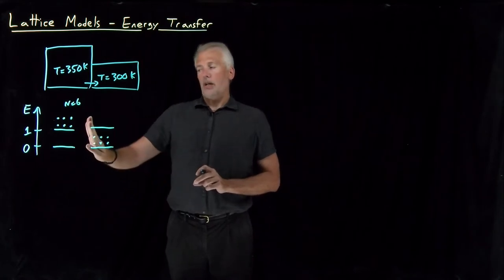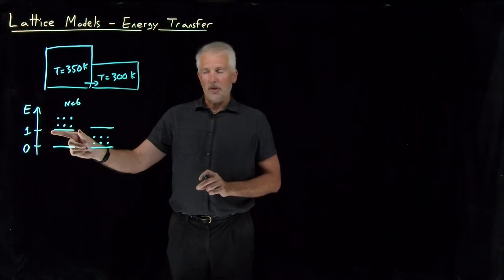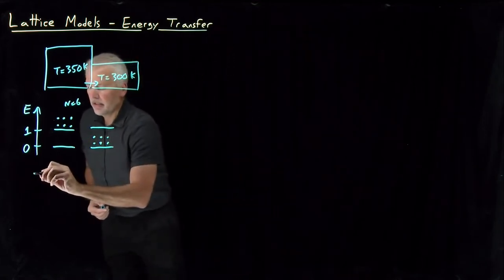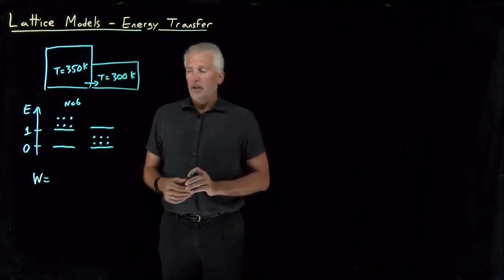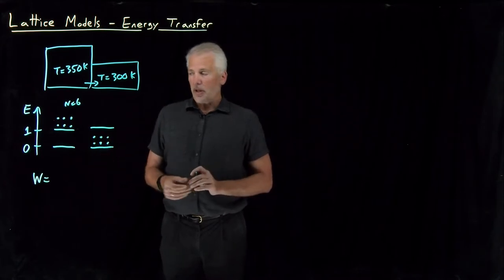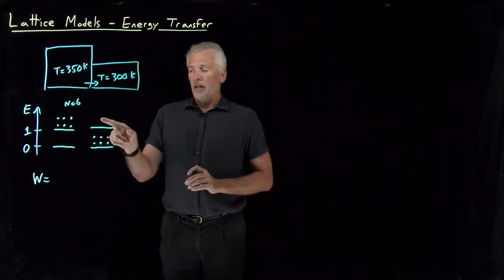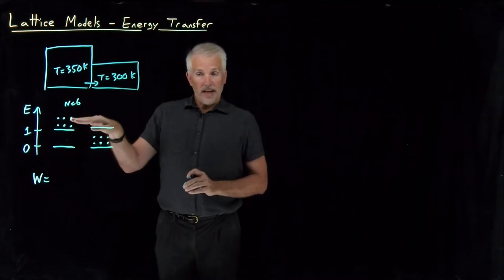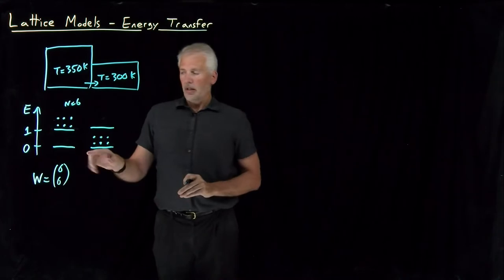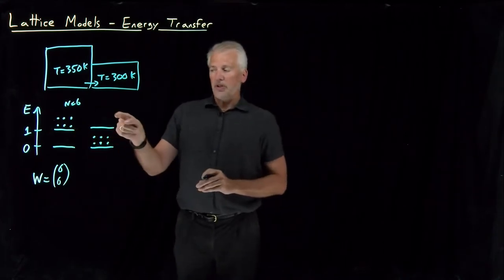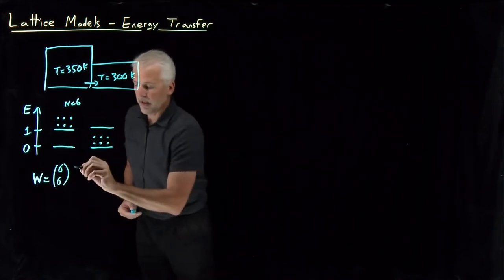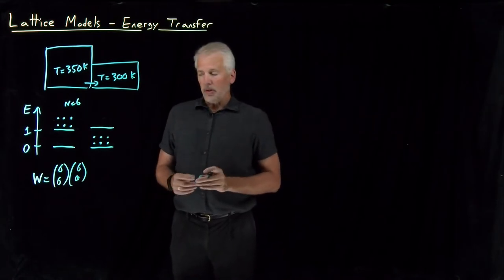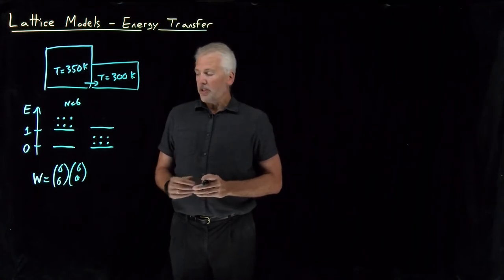The macrostate of the system: on the left, all six molecules have one unit of energy; on the right, all six molecules have zero units of energy. We can calculate the multiplicity — the number of ways of writing down a microstate that matches this macrostate. Six on the left with one energy and none with zero; on the right, none with one energy and six with no energy. The ways of choosing which six of my six molecules have one unit of energy on the left is six choose six, and on the right, six choose zero. We end up with these binomial or multinomial expressions to describe the multiplicity.